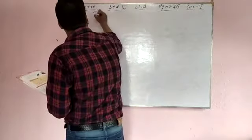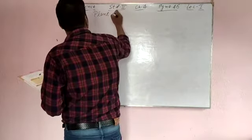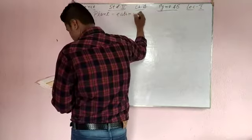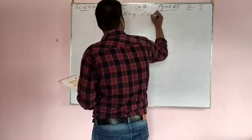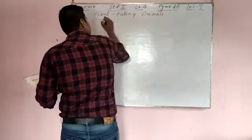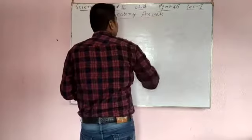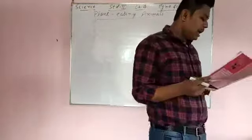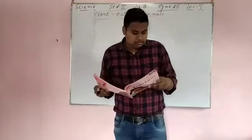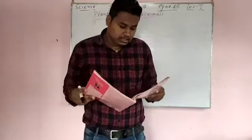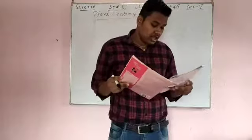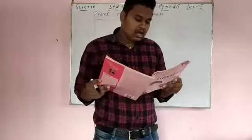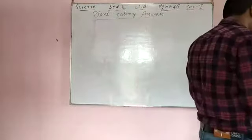Plant-eating animals. Animals that eat plants or the different parts of plants are called plant-eating animals. Giraffe, elephant, deer, and zebra are plant-eating animals.